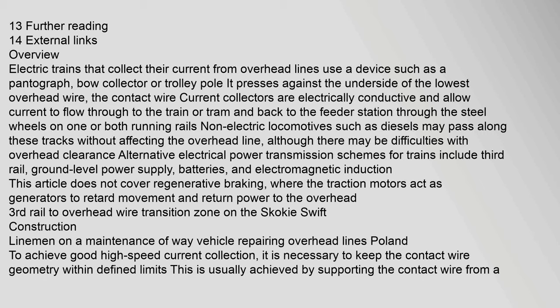Alternative electrical power transmission schemes for trains include third rail, ground level power supply, batteries, and electromagnetic induction. This article does not cover regenerative braking, where the traction motors act as generators to retard movement and return power to the overhead or third rail.